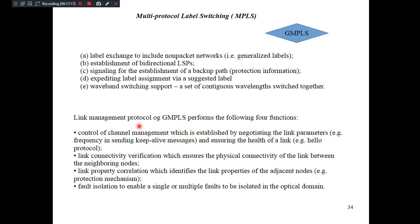Second, link connectivity verification, which ensures physical connectivity of the link between neighboring nodes. Whenever a link is established among neighboring nodes, physical connectivity is verified and ensured, because the physical connection must exist before the logical connection or transmission of a wavelength. Third, link property correlation, which identifies the link properties of adjacent nodes — for example, the protection mechanism should be correlated as far as security is concerned.